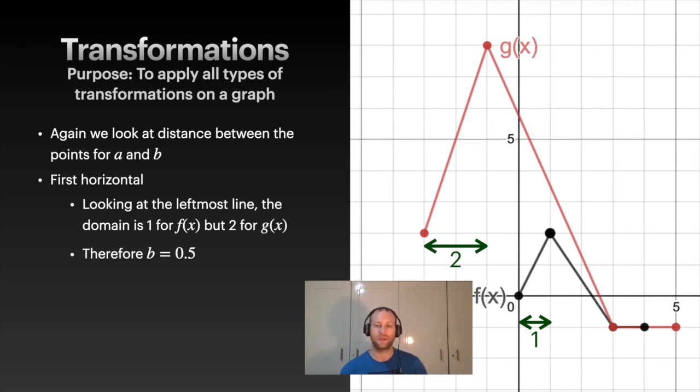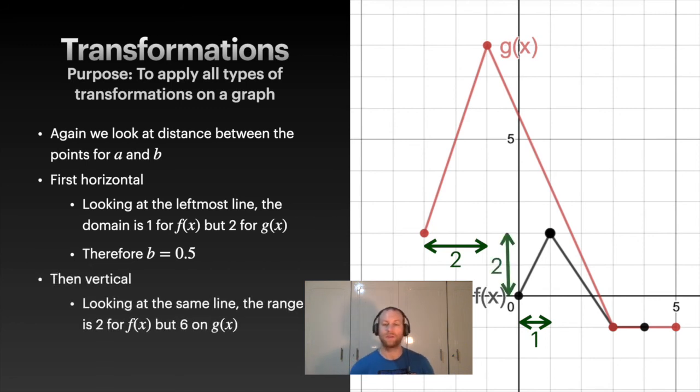We're going to do vertical as well between the same two points. For f(x) it's two between those two points, but for g(x) it's six. So we went from two to six, therefore we must times by three. So a is three. That is combining all of the transformations. Next thing we're going to deal with is inverses, which is going to be our last section.